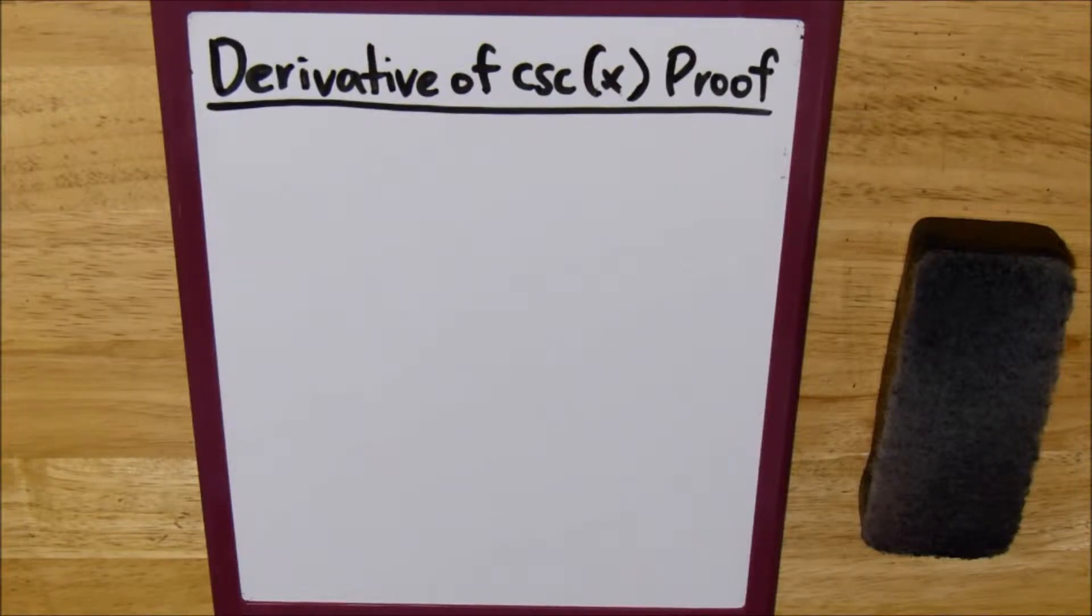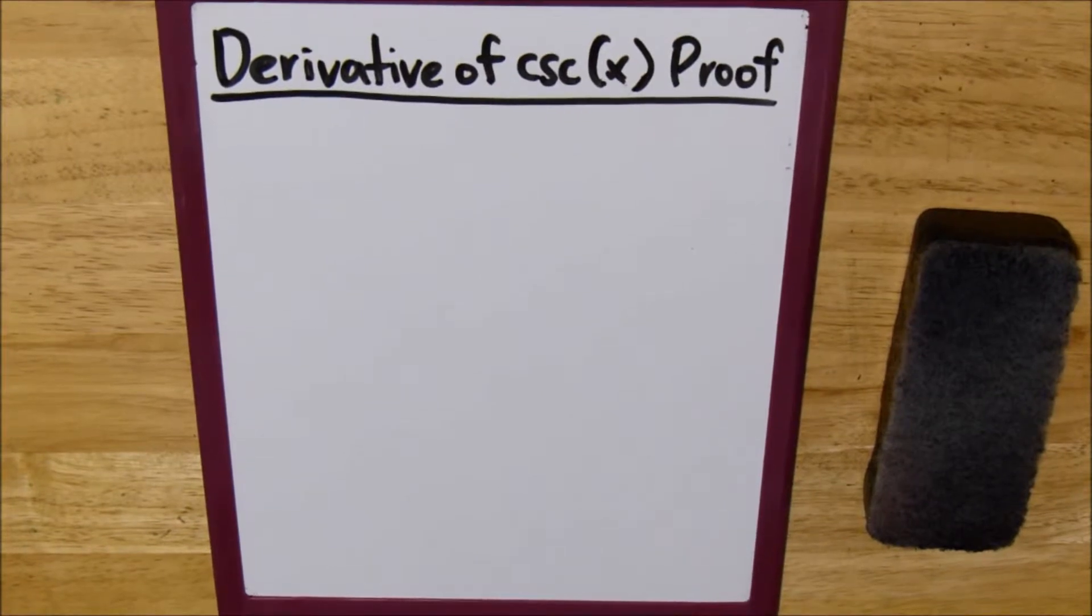Alright, so today we're going to be talking about the derivative of cosecant of x. The derivative of cosecant of x is pretty similar to the derivative of secant of x, tangent of x, and cotangent of x in that you need to know certain sine and cosine properties and you need to know how to use the quotient rule.